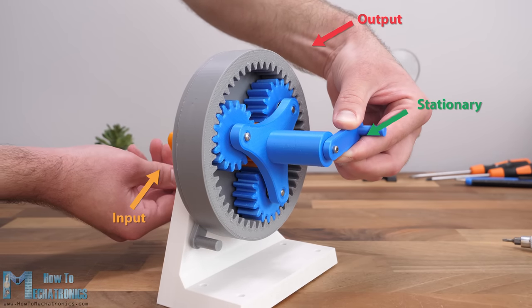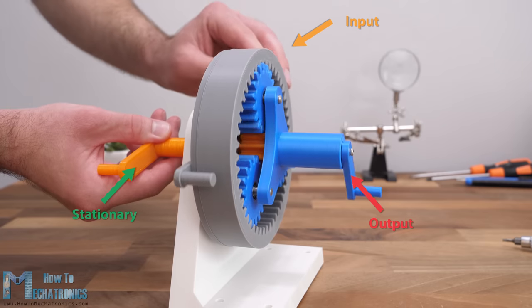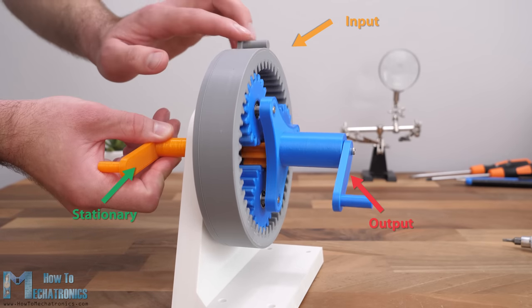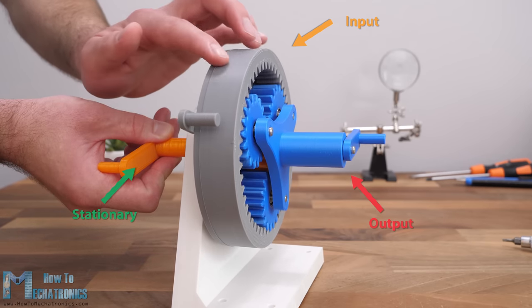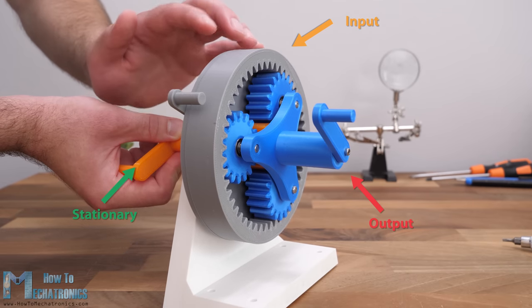Another example would be to have the sun gear held stationary and use the ring gear as input. In this case the carrier will be the output and it will be 1.25 times slower than the input. That's a ratio of 5 to 4.